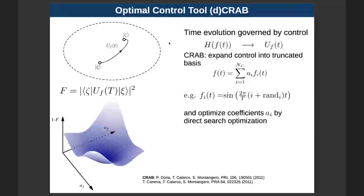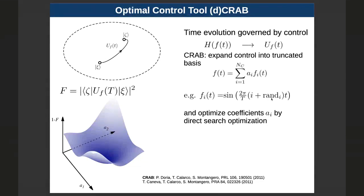Maybe in 10 years from now, you will be the first generation of quantum technology engineers in industry, and these things are not just columns on a figure but actual industrial realities. When you talk about optimal control, the central figure is a control objective, which basically says you have to know what you want to optimize — what is your target, what do you want to achieve — and you have to find a way to cast this into some quantitative formula.